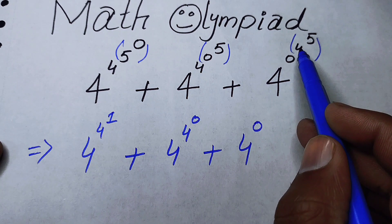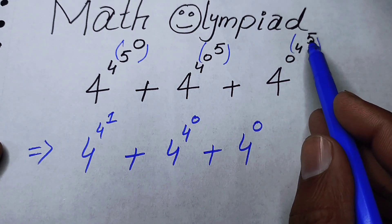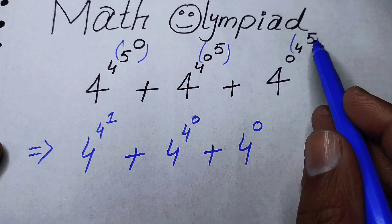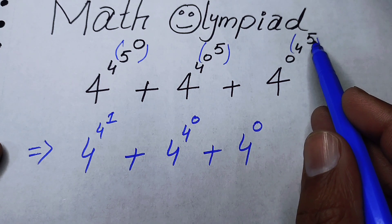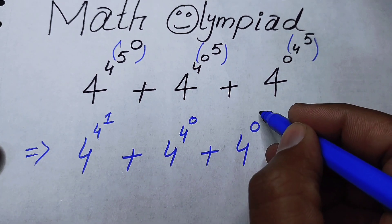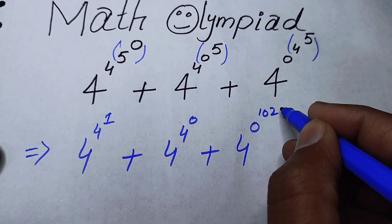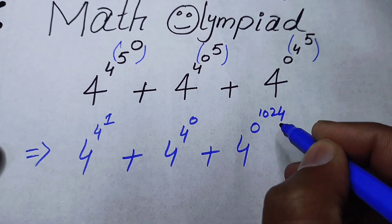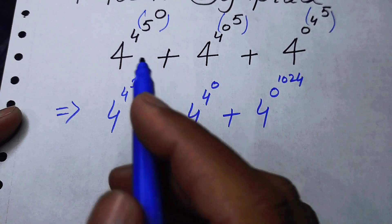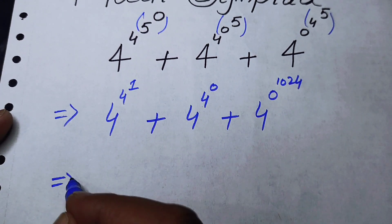In this term we have 4 to the power of 0, and then 4 to the power of 5. We solve 4 to the power of 5, and 4 to the power of 5 equals 1024.